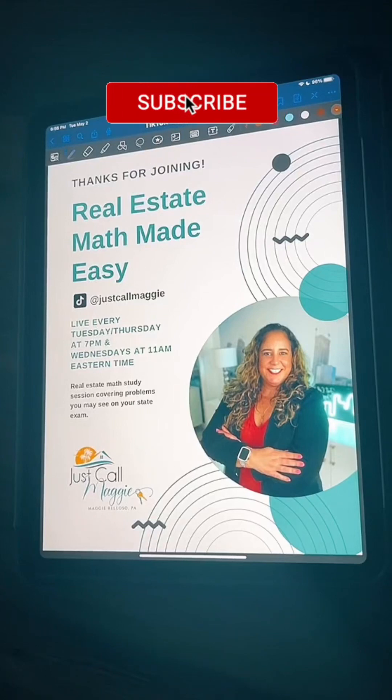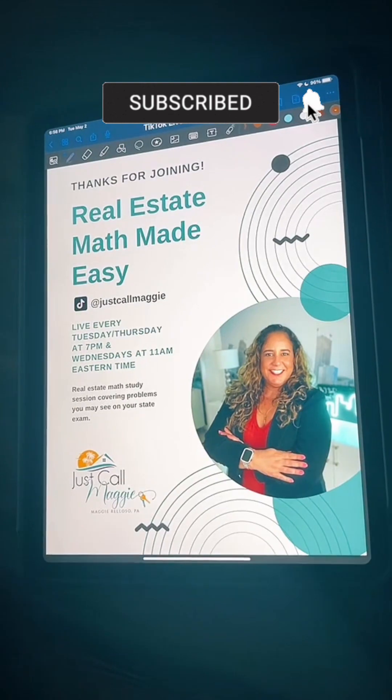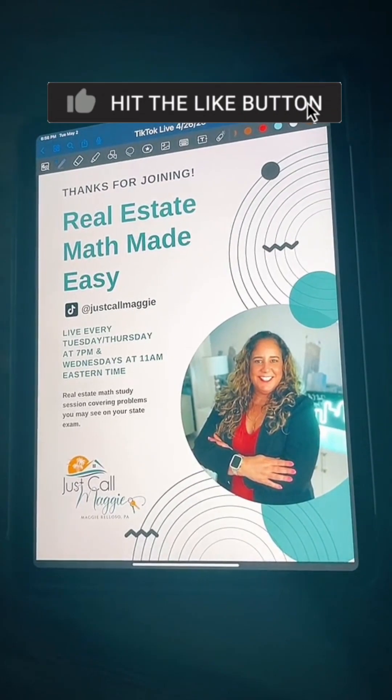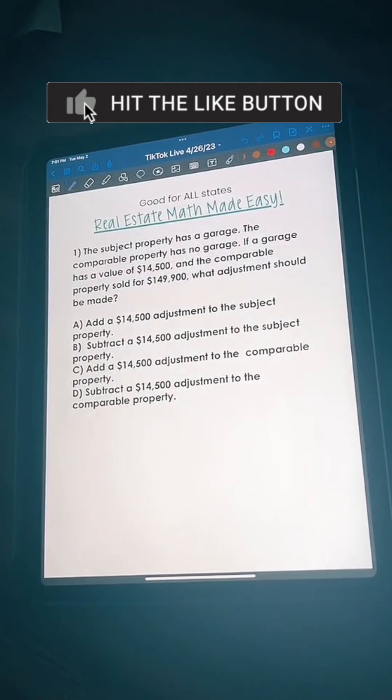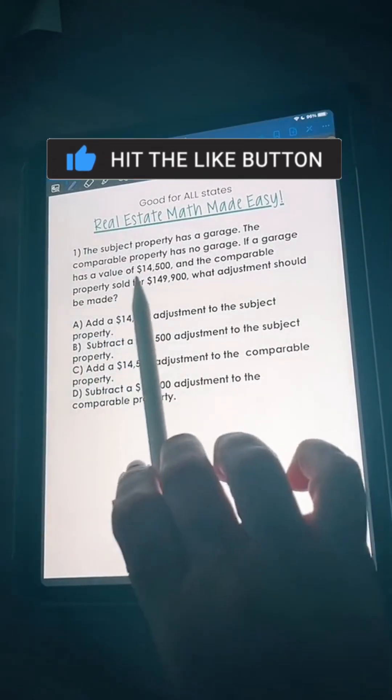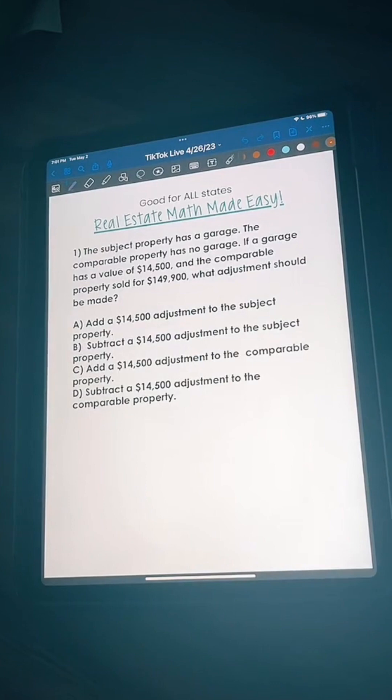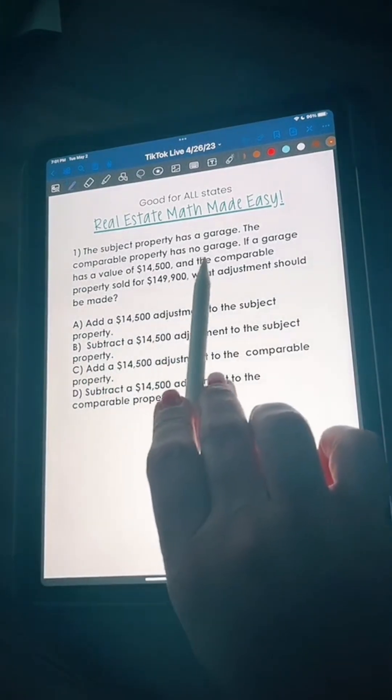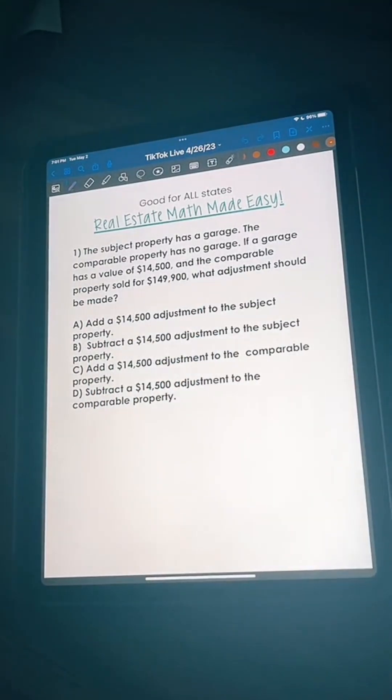Hi everybody, welcome to our live. We're going to be doing real estate math problems similar to what you'll be seeing. This is good for all states. Let's get started. Number one says the subject property has a garage, the comparable property has no garage. If a garage has a value of fourteen thousand five hundred dollars and the comparable property sold for a hundred forty nine thousand nine hundred dollars, what adjustments should be made?